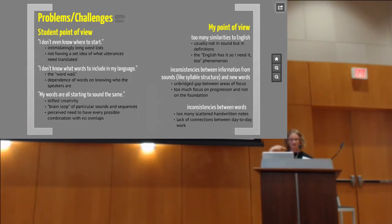Also, that's related to the next one, that brain loop, that particular sounds and sequences. You say, I love this sound. And all of a sudden that sound shows up in every single one of your words. You know what I'm talking about. And then also the perceived need to have every possible combination with no overlaps. So I don't like overlaps. I'm making this language. And I have to very lovingly remind them, think of our wonderful language in English. You know, bee, what did I just say? Did I say B-E? Did it say B-E-E? Or am I referring to the letter B?